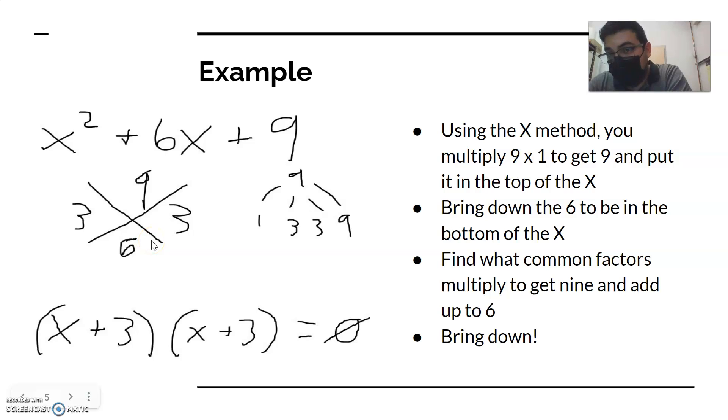And then you have to find what factors of 9 on the top multiply to 9 and also add up to 6. So 1 times 9 does equal 9, but does 1 plus 9 equal 6? No. So the next factor of 9 is 3. 3 times 3 equals 9 and does 3 plus 3 equal 6? Yes. So 3 and 3 would go on the left and right.